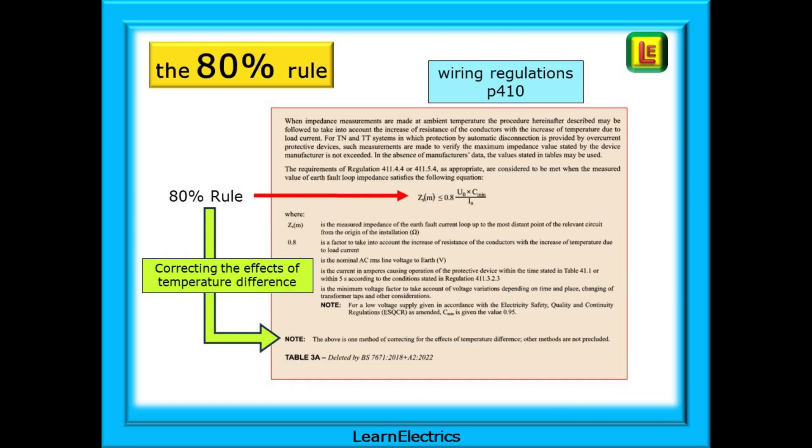This is because we have now applied the 80% rule. In the formula we have done everything shown in stages except multiply by 0.8 which we have now done. 1.37 multiplied by 0.8 is 1.1 ohms. So ZS measured is 1.1 ohms as shown on the previous slide.